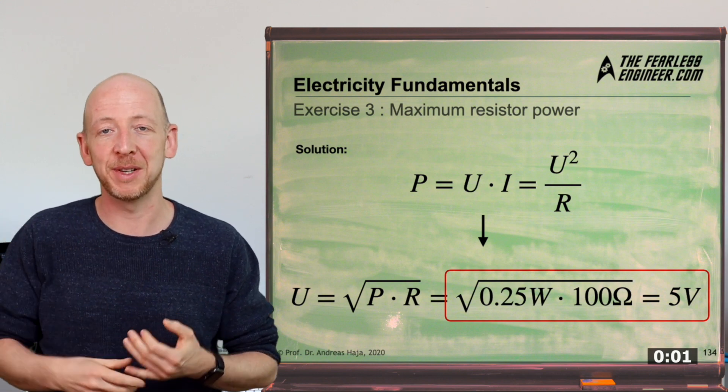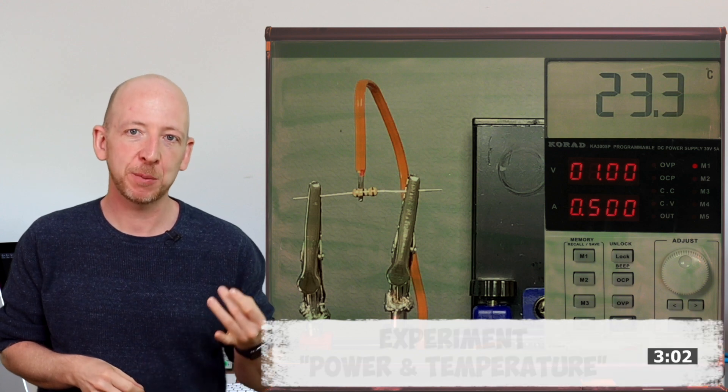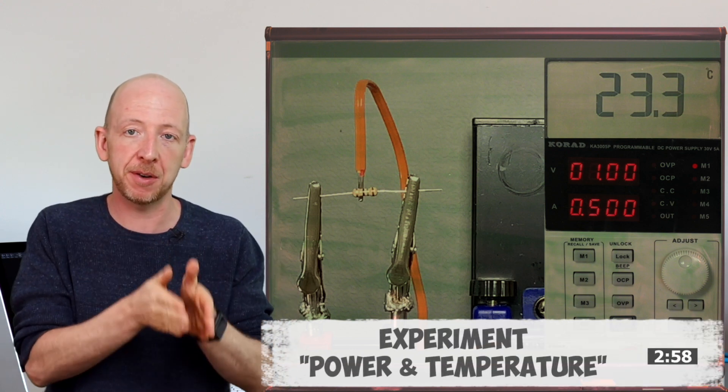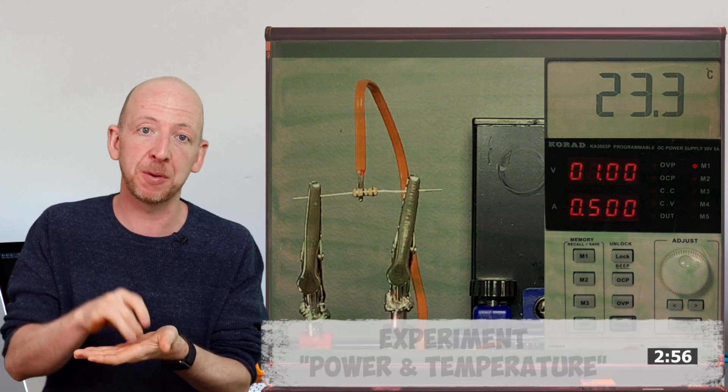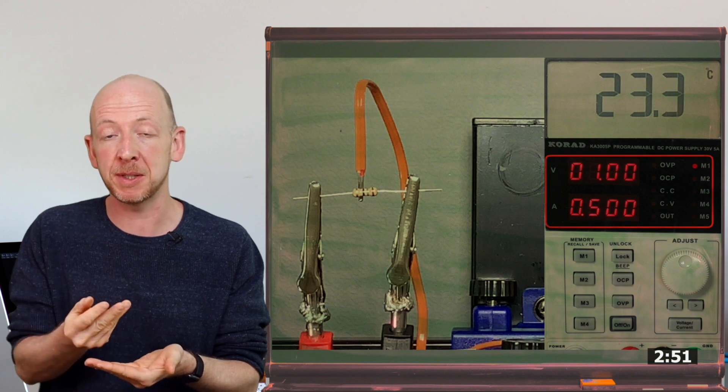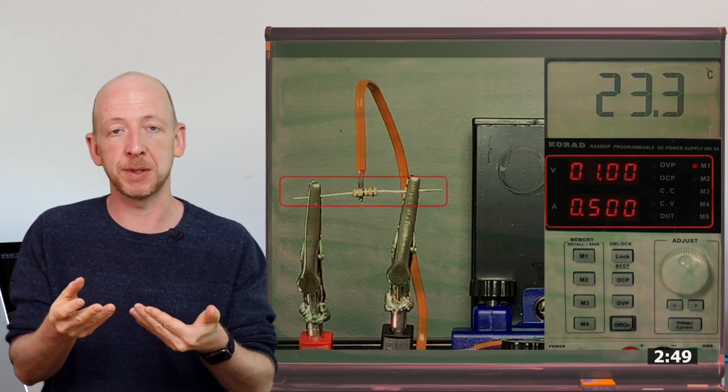Okay, and now it's time for an experiment. In the first task we calculated the power which is converted into heat at the resistor from both current and voltage. Now we want to perform a measurement to determine power, which we do by connecting a voltage source with an integrated current meter to a 15 ohm resistor.